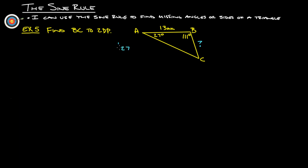So, if we do 27 plus 111, we get 138. So, now we take 180 minus 138, and that gives us 42 degrees. So, we now know that this is 42.